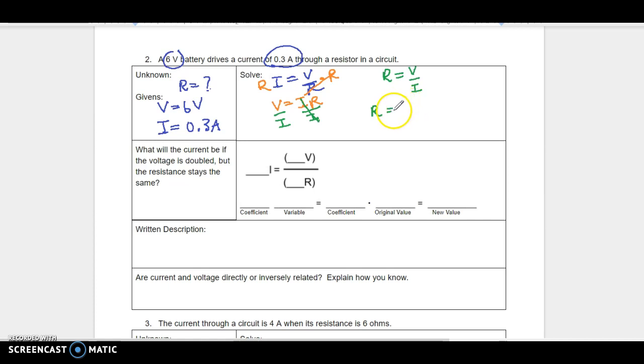V equals IR, yeah. Okay, so R equals, it's six volts, divided by 0.3 amps. And let's see. Okay, so six divided by 0.3, that's what I thought it was, 20, is going to be 20 Ohms, because it's a resistance. Remember, that's a Greek letter omega.